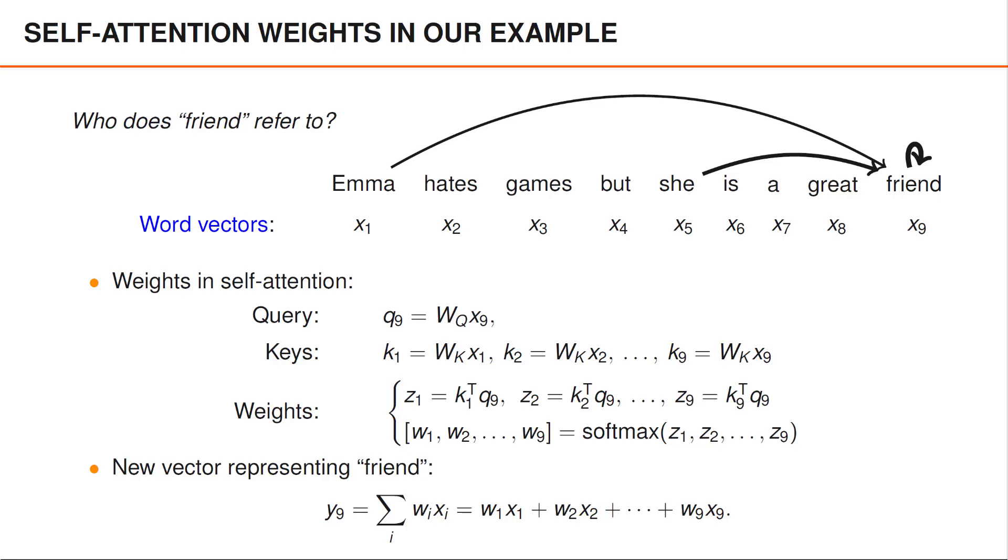To wrap up what we've said so far, we have discussed how to compute a new word embedding for the word friend by taking a weighted average. The first thing we would do is to compute a query vector Q9 by multiplying the matrix WQ with X9.